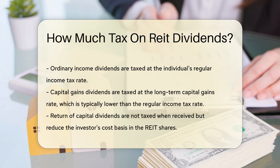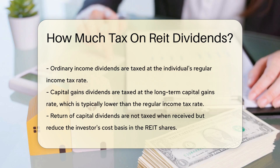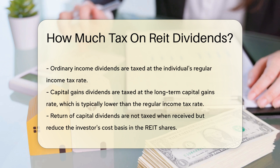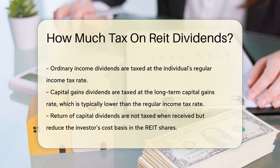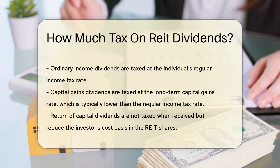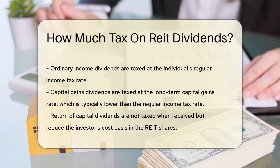Ordinary income dividends are taxed at the individual's regular income tax rate. This is often higher than the tax rate on qualified dividends from other types of investments. Capital gains dividends are taxed at the long-term capital gains rate, which is typically lower than the regular income tax rate.